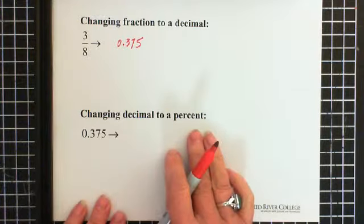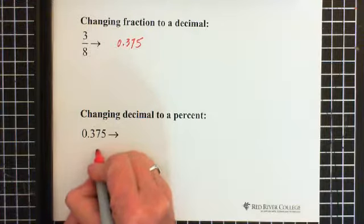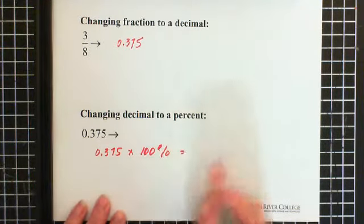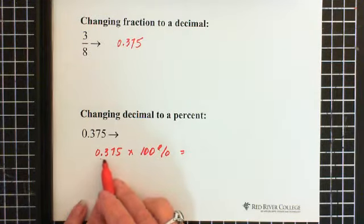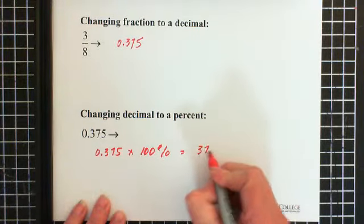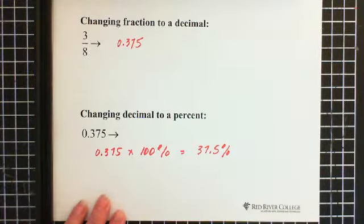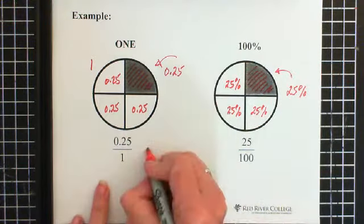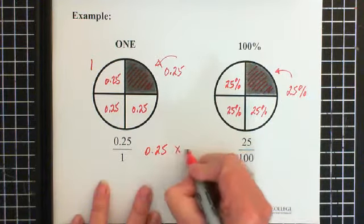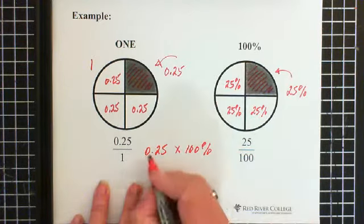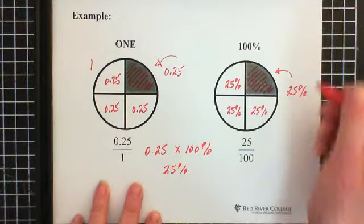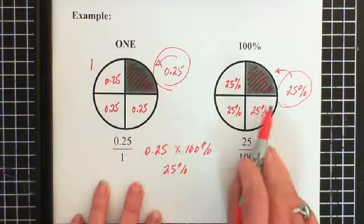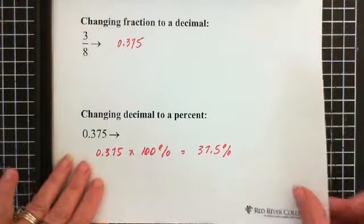If we want to change a decimal to a percent, what we do is multiply that decimal times 100%. So 0.375 times 100% is 37.5%. And if you remember when we were talking about this, notice here we had our decimal 0.25. And if we multiply it by 100%, we end up with 25%, which is what we had here. So this is essentially the same as this, just written in two different ways. One is as a decimal, one is as a percent.